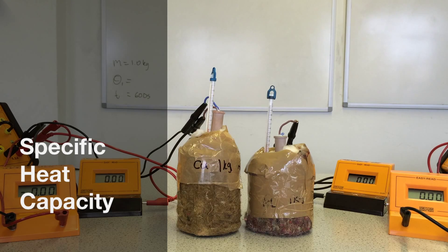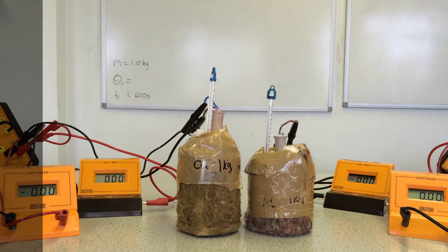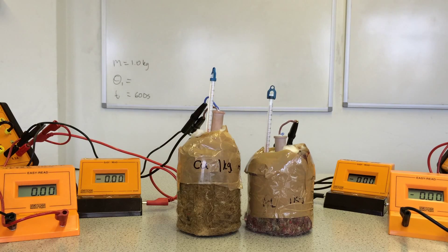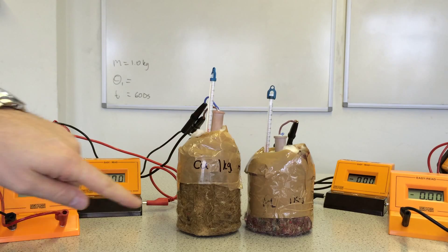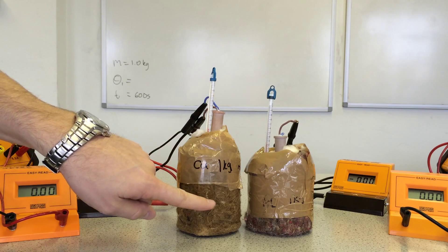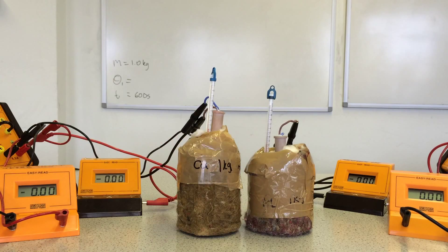This is the experiment to determine the specific heat capacity for metal. I have two metal blocks, a copper block on the left and an aluminum block on the right. They both have a mass of one kilogram.